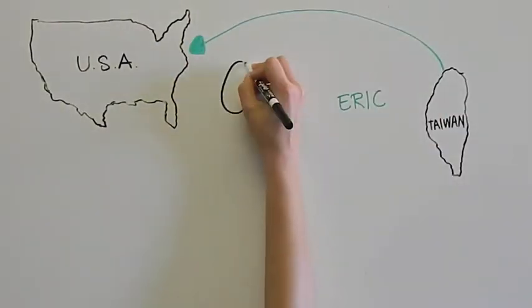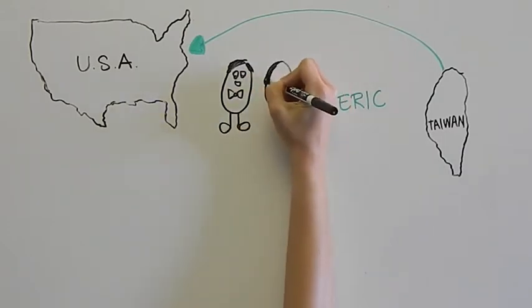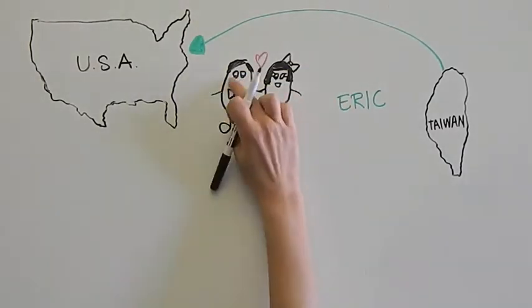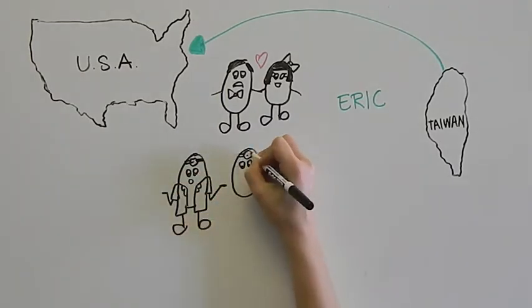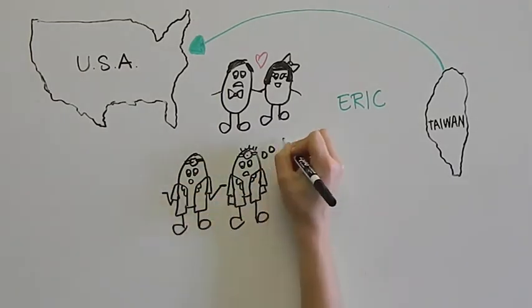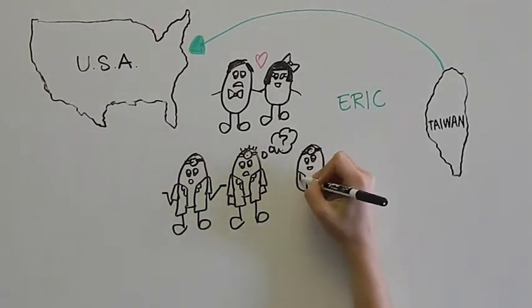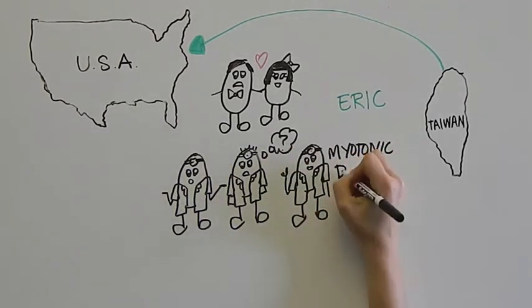Eric's parents came to the United States from Taiwan for graduate school. Shortly after Eric and his brother Thomas were born, their father started experiencing symptoms of myotonic dystrophy. He went to many doctors, many of whom did not know anything about the disease, but he was formally diagnosed in 1989.